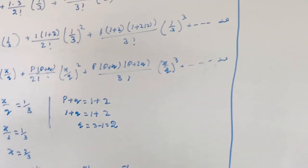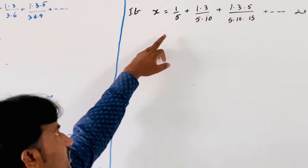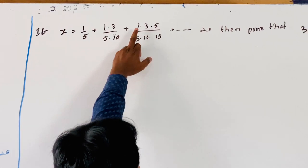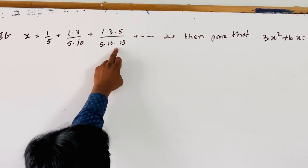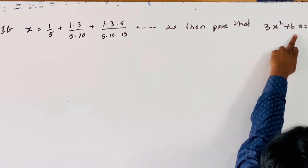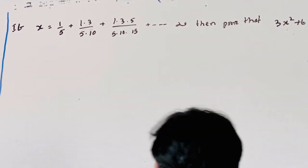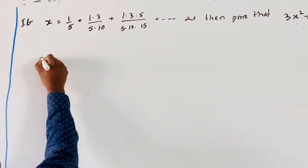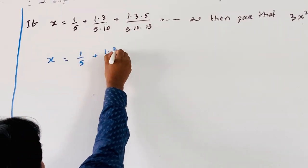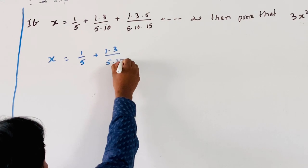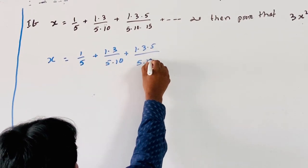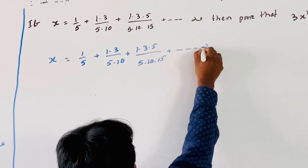Now I will discuss another example. If x = 1/5 + (1·3)/(5·10) + (1·3·5)/(5·10·15) and so on to infinity.